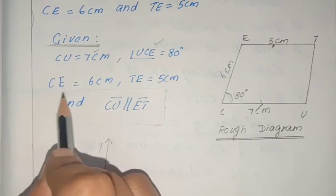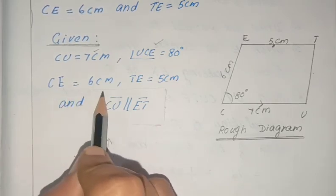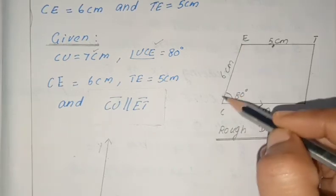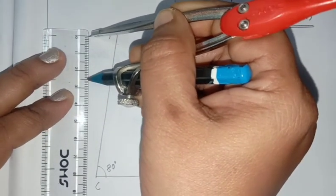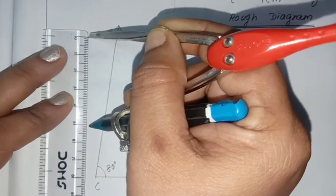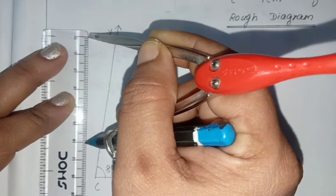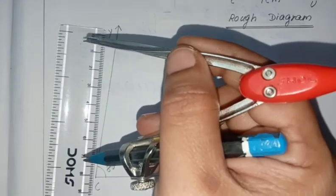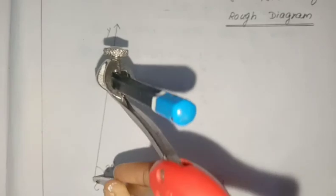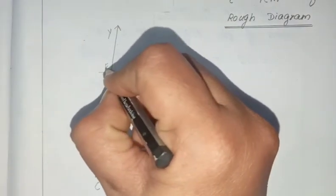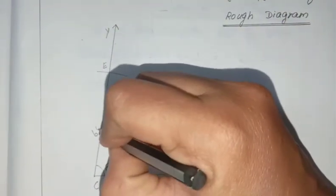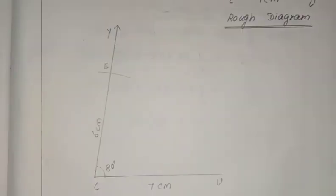Now we have to draw CE equal to 6 cm. From C, we have to draw an arc of 6 cm. Take the compass and scale and measure 6 cm. Keep the compass on point C and draw an arc on the ray. Name it as E. So CE equal to 6 cm is done.